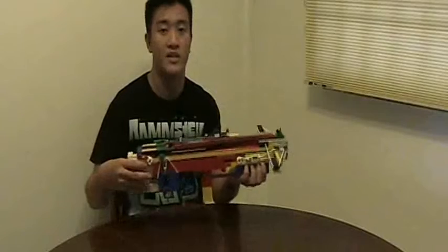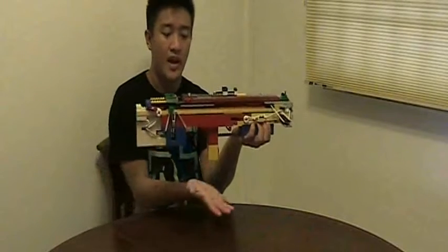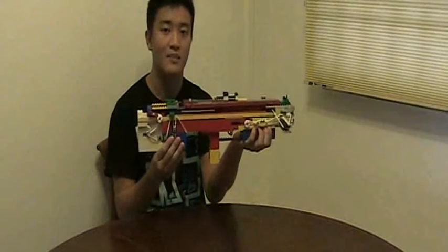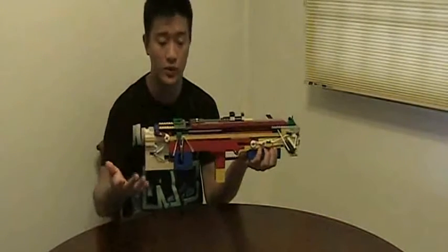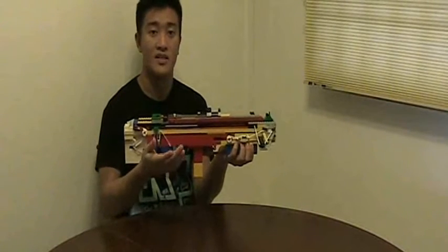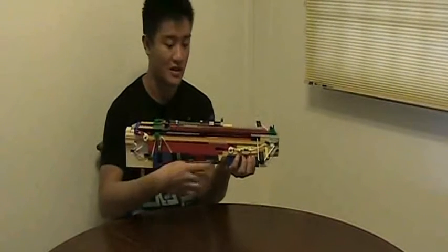Now one last feature I'm going to show you about my crossbow is that my crossbow is actually a bullpup design. Now what this means is that the handle of the crossbow or the weapon is in front of the magazine. So this is different from an M16 where the magazine is in front of the handle, and much similar to a Steyr or a SAR21 or a Famas from France.